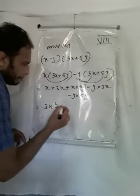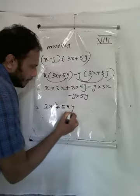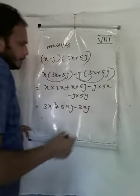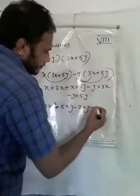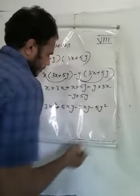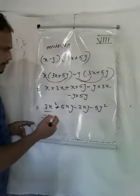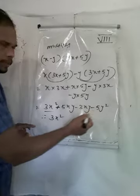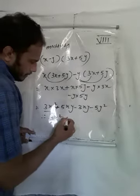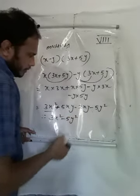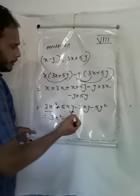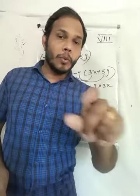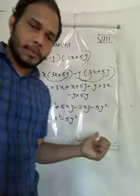Continuing: plus 5xy, minus y into 3x gives 3xy, minus y into 5y gives 5y squared. So we have 3x squared plus 5xy minus 3xy minus 5y squared. Combining like terms: 5 minus 3 gives 2.